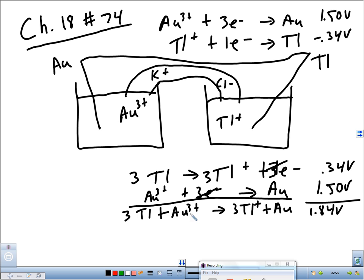I need three thalliums for every one gold because each thallium only is giving away one electron. So I need three thalliums to give away an electron because the gold needs three. That's why it's balanced that way. Which one is our anode and which is our cathode? This is our anode and this is our cathode. Why? Tl is being oxidized.